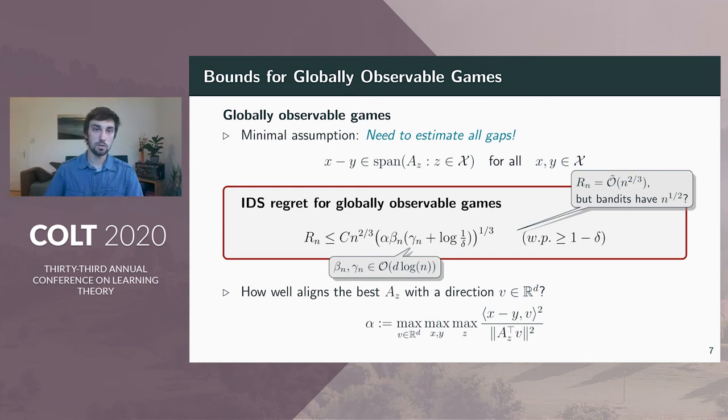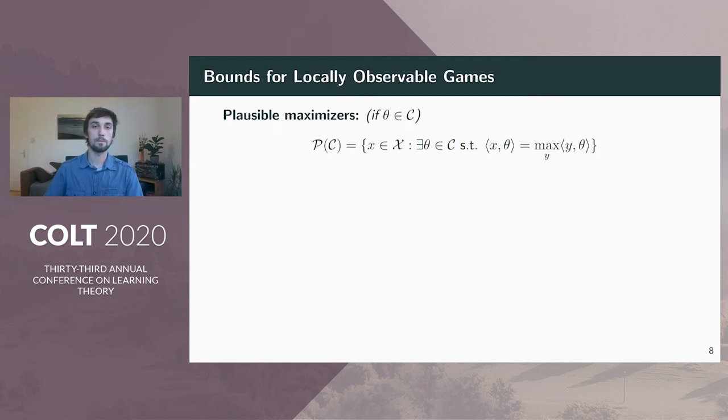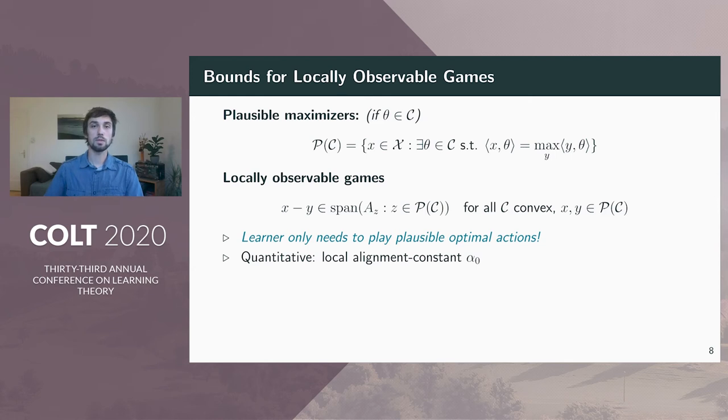So what is happening in cases where we know that square root n regret is possible? To get the faster rate, we have to make a stronger assumption about the feedback maps. First, we define the set of plausible maximizers P. Assume the true parameter is contained in some confidence set C. Then P is the set of all actions which are optimal for some parameter in C. The condition for locally observable games says that any reward difference between plausible optimal actions can be estimated by playing within the same set. This means that the learner needs to choose only plausible maximal actions according to the current confidence level, which significantly reduces the regret. As in the globally observable case, we also need a quantitative version of this idea. This is captured with the constant alpha_0 that is detailed in the paper.